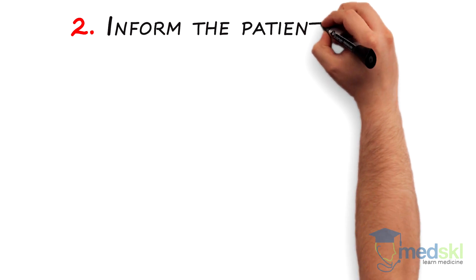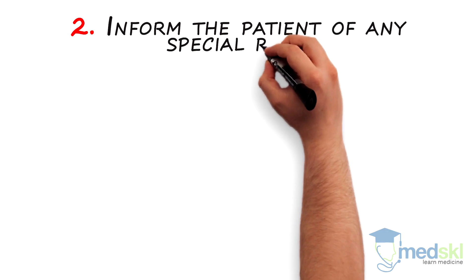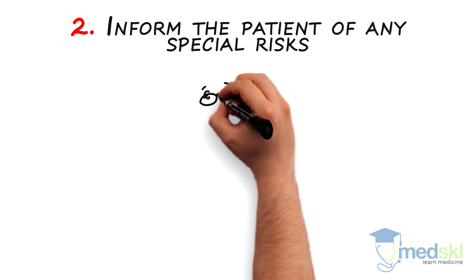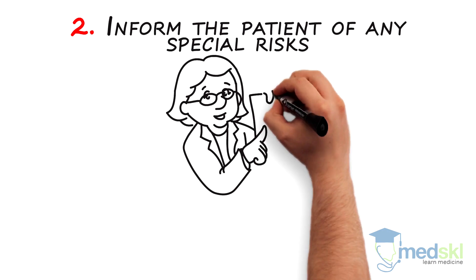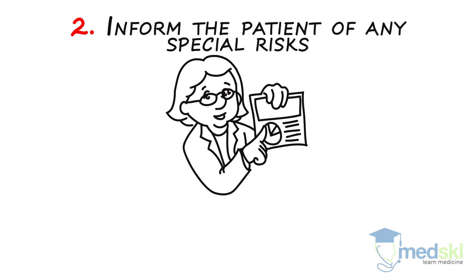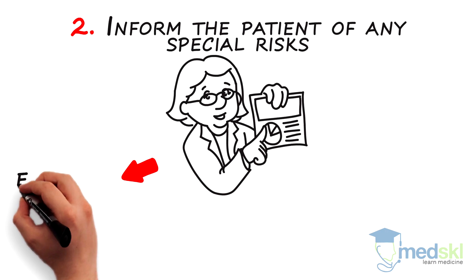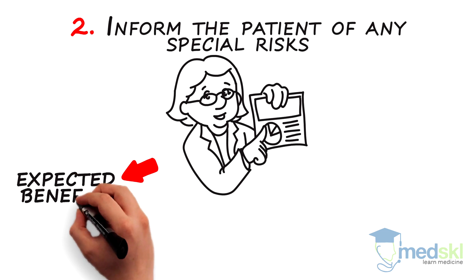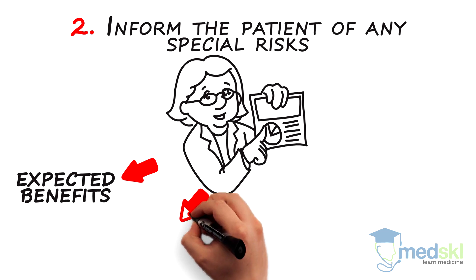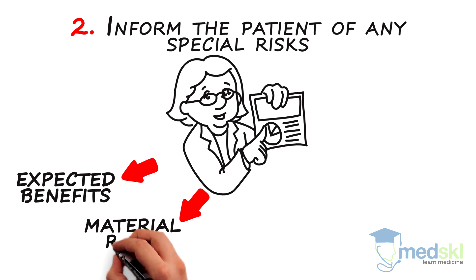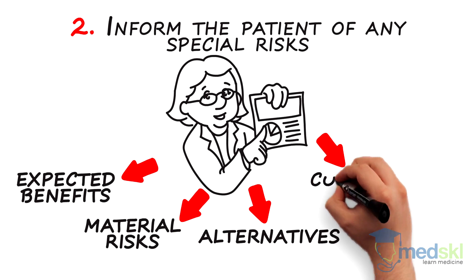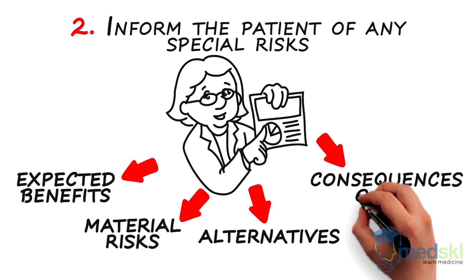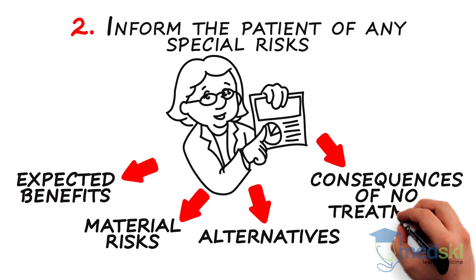2. Inform the patient of any special risks. During the consent process, you will need to provide your patients with information about the expected benefits, possible material risks, any alternative course of actions, and the likely consequences of not having the treatment.